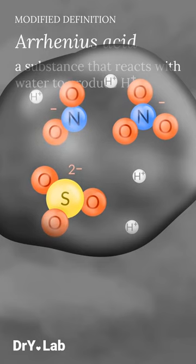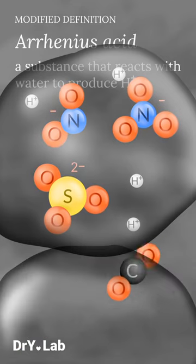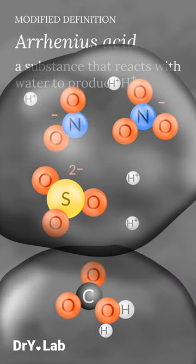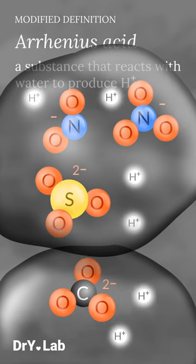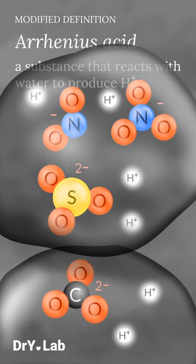The modified definition of Arrhenius acid includes nonmetal oxides that react with water to form hydrogen ion. The hydrogen ion of the acidic solution actually originates from the water molecule.